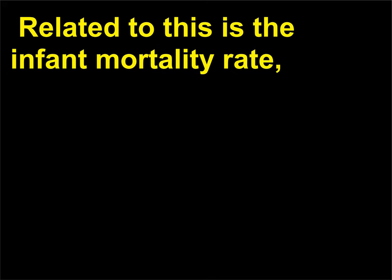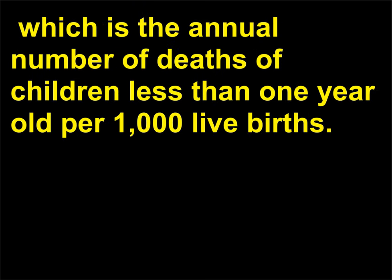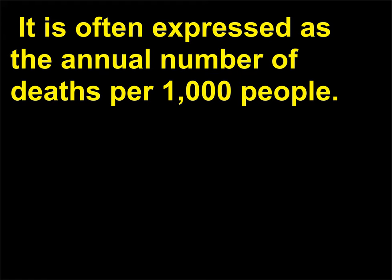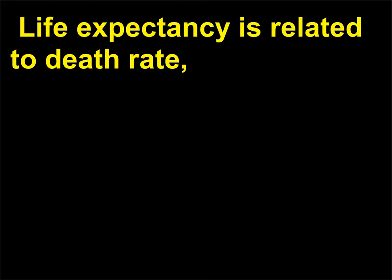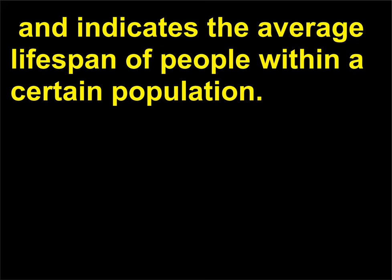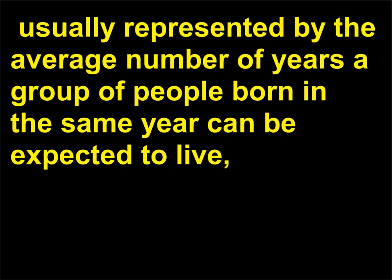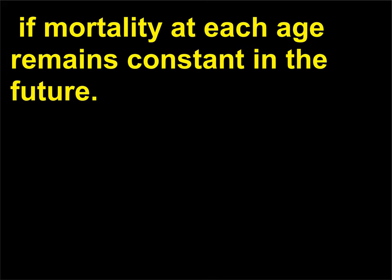Related to this is the infant mortality rate, which is the annual number of deaths of children less than one year old per 1,000 live births. The death rate, or crude death rate, refers to the ratio of deaths in an area population annually, often expressed as the annual number of deaths per 1,000 people. Life expectancy is related to death rate and indicates the average lifespan of people within a certain population, calculated on the basis of statistical probabilities — usually represented by the average number of years a group born in the same year can be expected to live, if mortality at each age remains constant in the future.